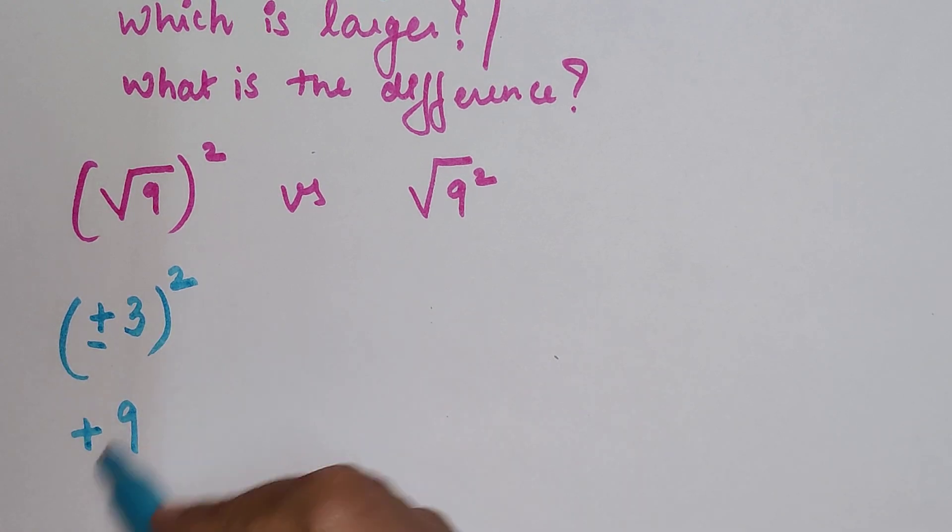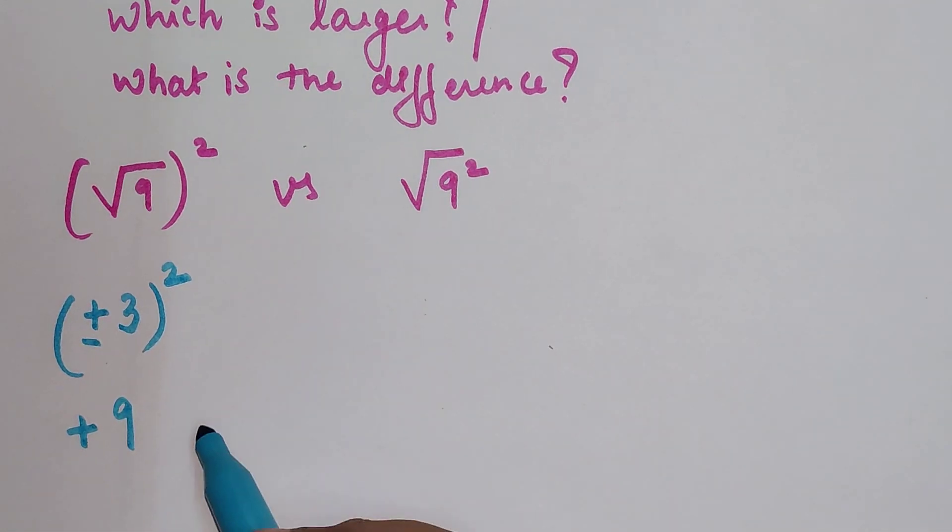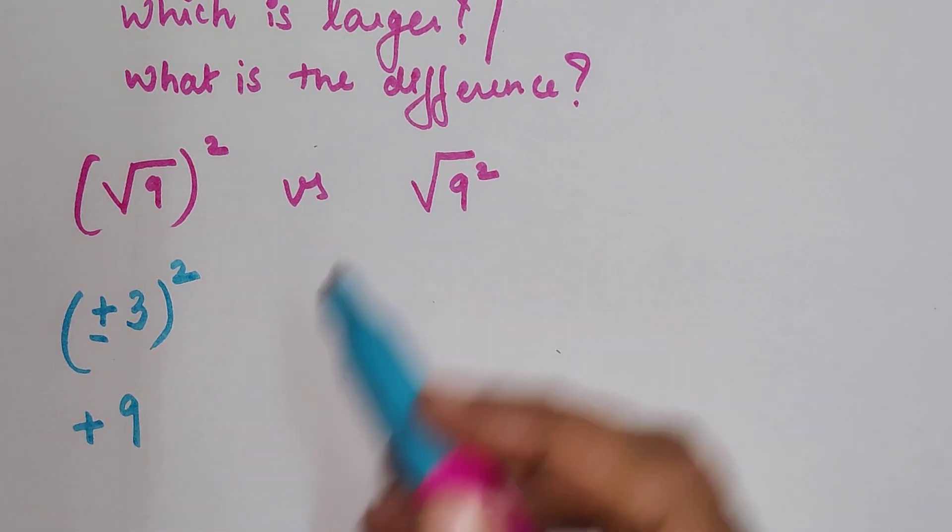First we have (√9)², the whole square. So first we will take the square root of 9. Now square root of any number is always coming out with plus or minus sign.